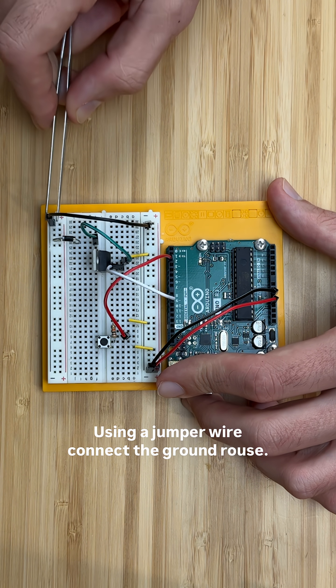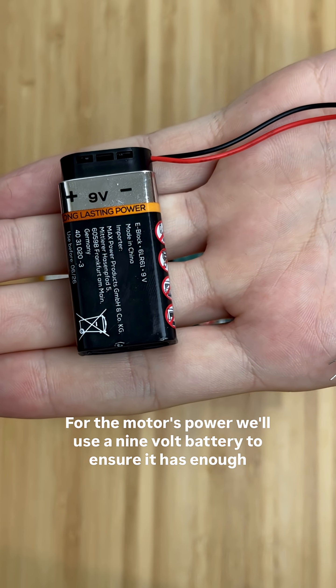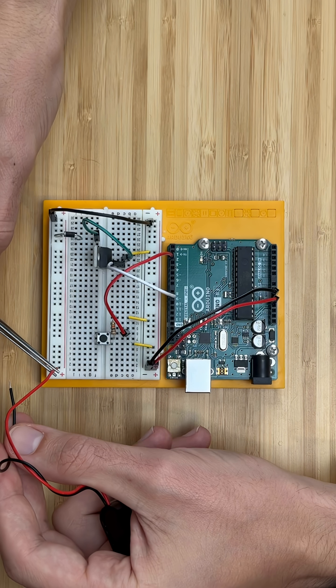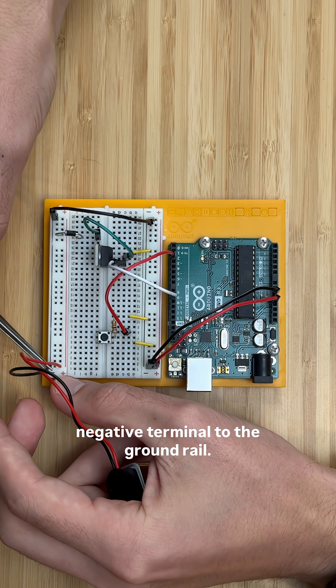Using a jumper wire, connect the ground rows. For the motor's power, we'll use a 9 volt battery to ensure it has enough voltage to run. Connect the positive terminal of the battery to a new power rail, and the negative terminal to the ground rail.